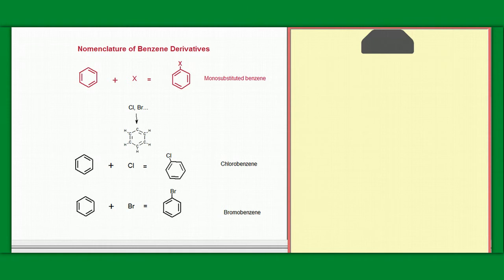Some of the important reactions of benzene and its remarkable stability were discussed in the previous chapter. Let's now look at how we name the derivatives of benzene.